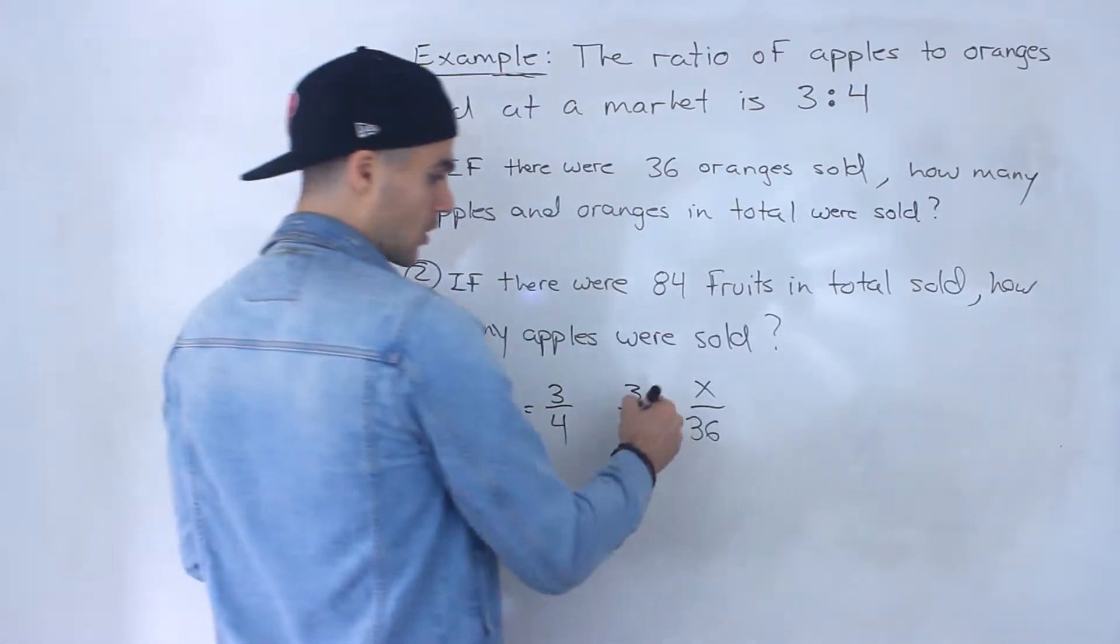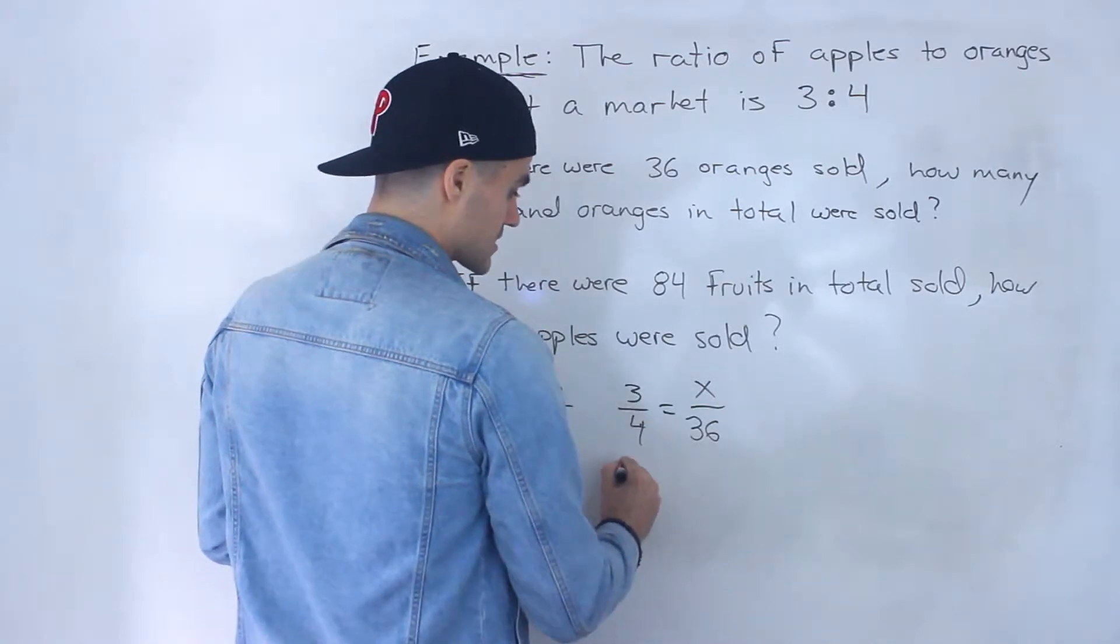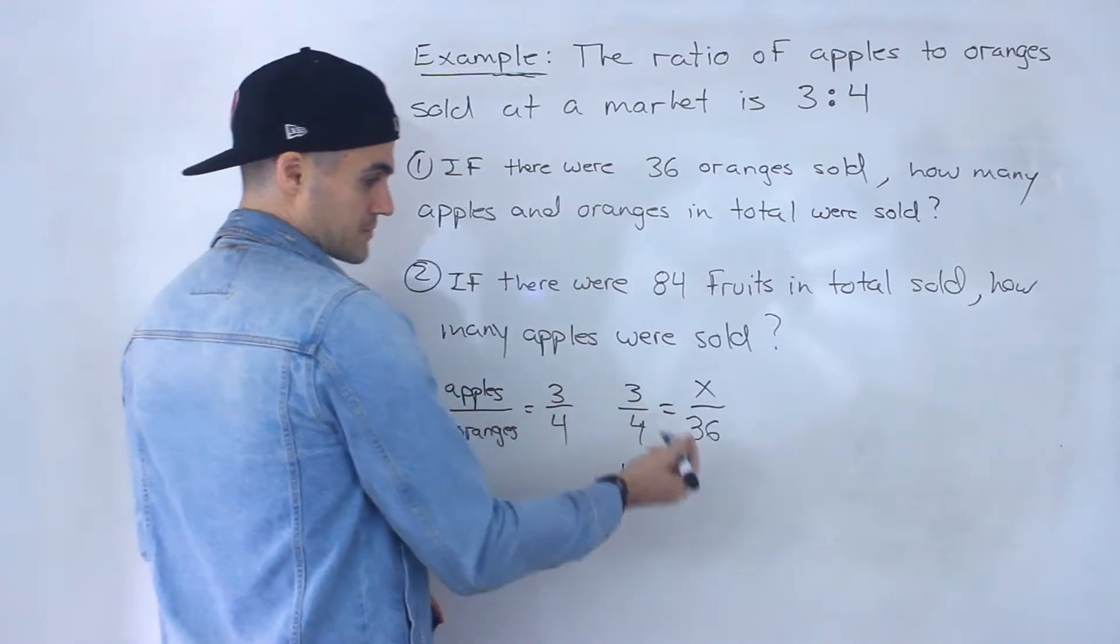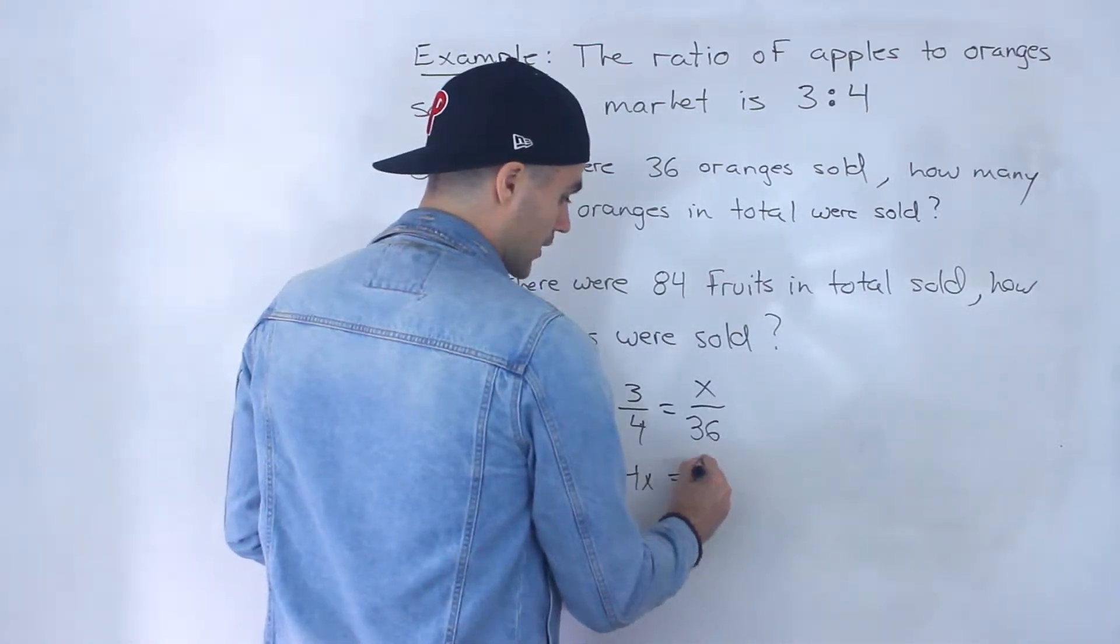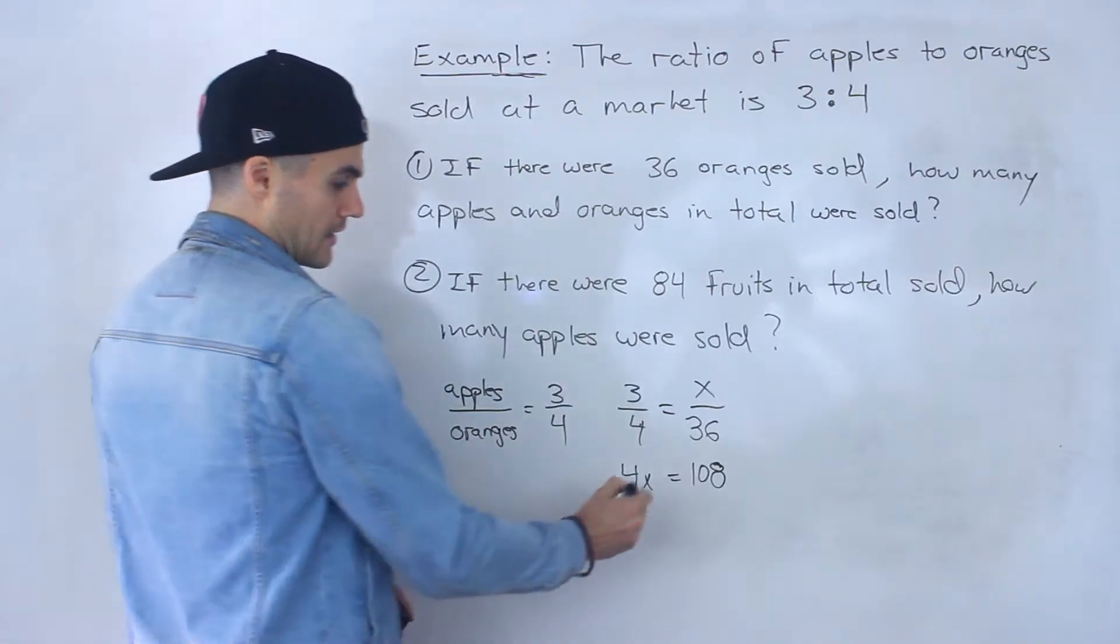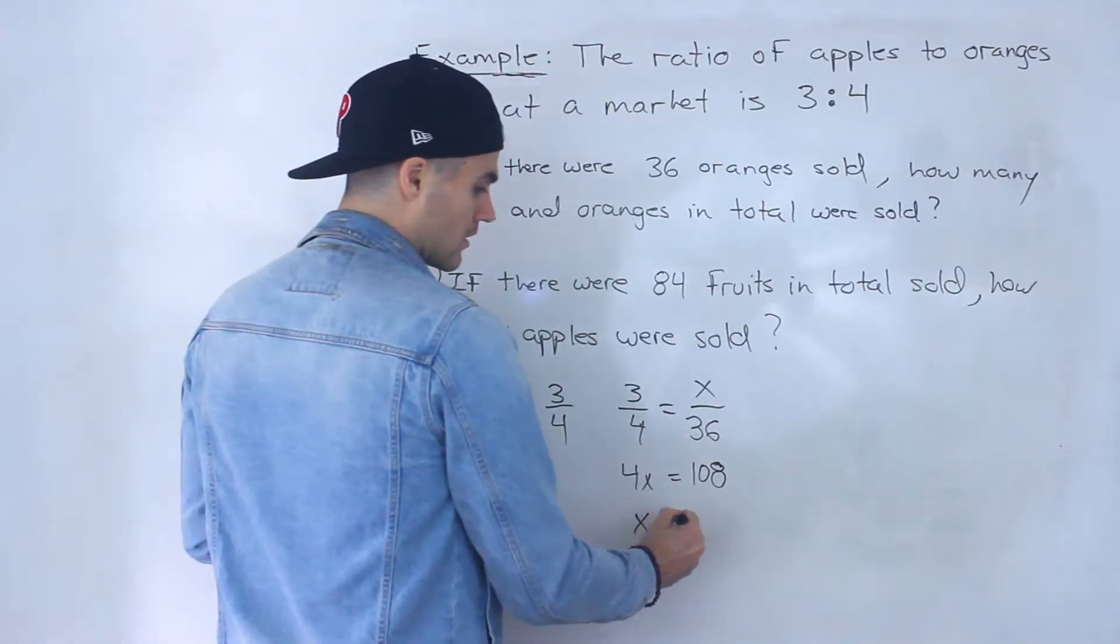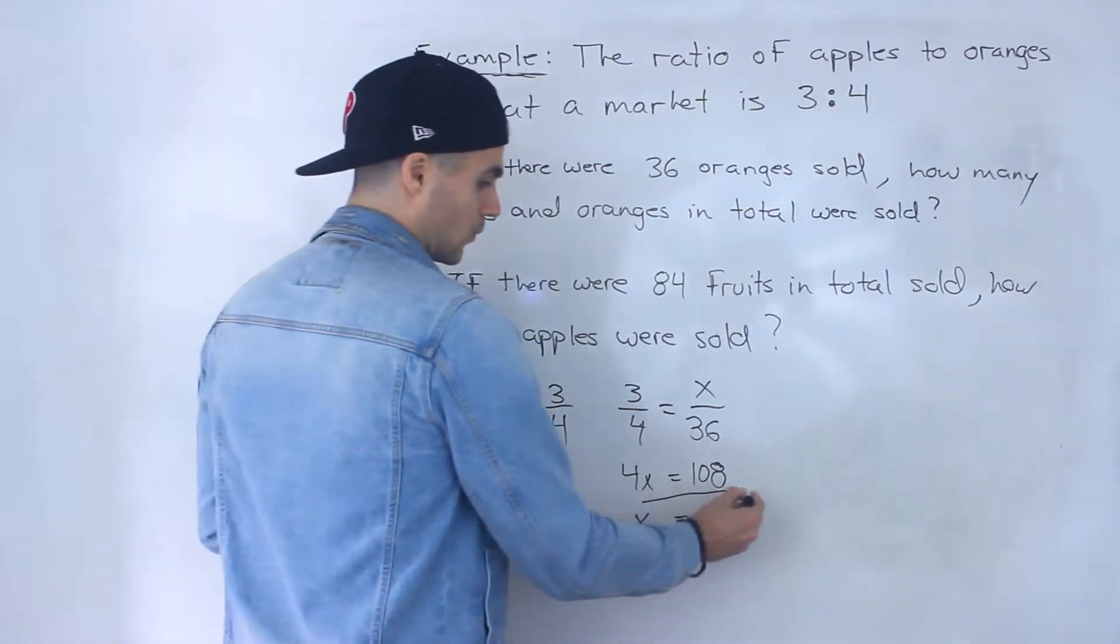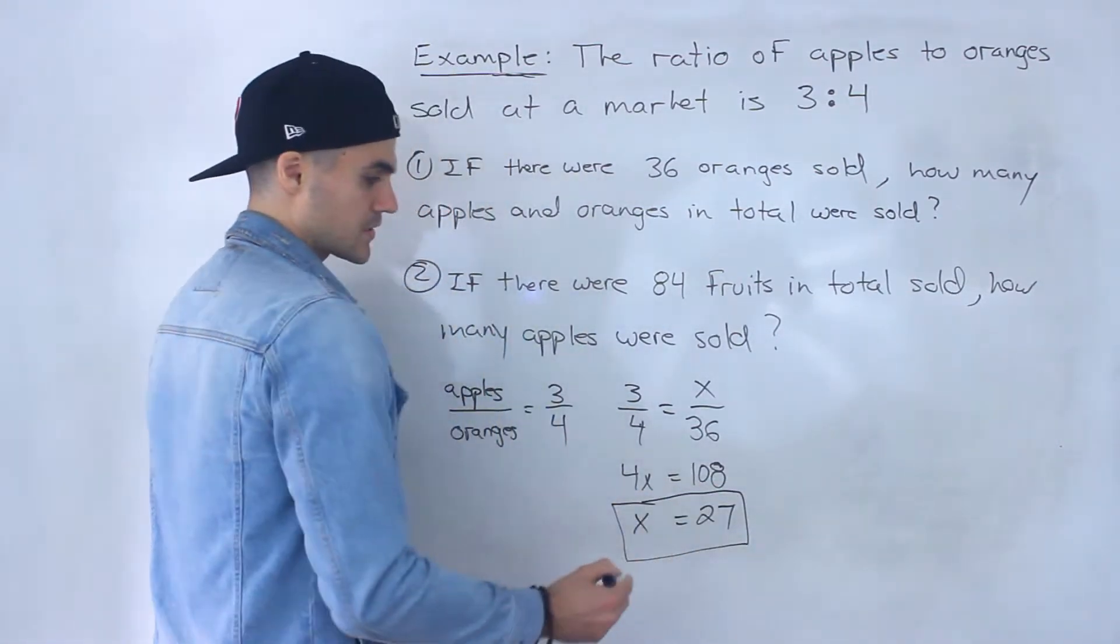What we can do is cross multiply. So 4 times x is 4x, and then 3 times 36 is 108. If we divide both sides by 4, we would end up with 27. So what does this represent? x equals 27.